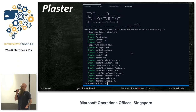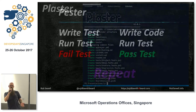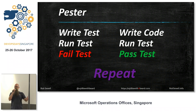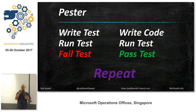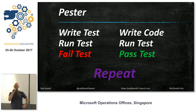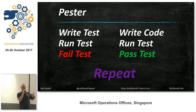Now we need to write some code, so we're going to use test-driven development with Pester. We're going to write our test, run our test, fail our test, write our code, run our test, and pass our test. We repeat that ad infinitum until we have something we're able to deliver to the gallery.